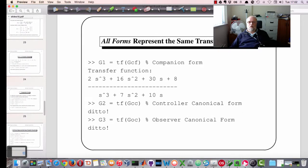But all forms represent the same transfer function, as you'll see. If you do these commands, if you take GCF, GCC, and GOC, and just produce a transfer function from them, G1, G2, and G3 should all be the same.